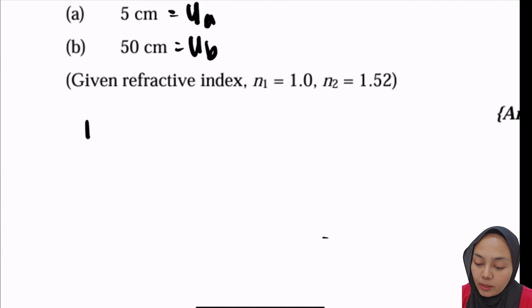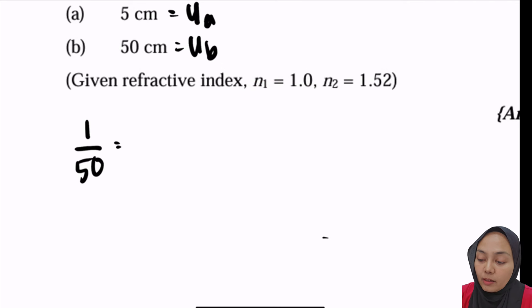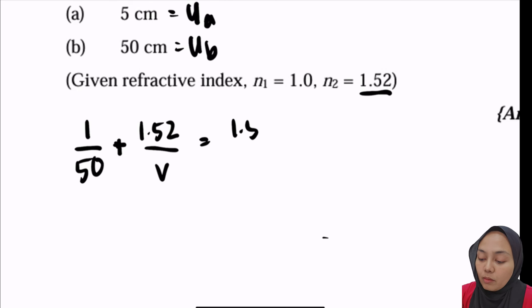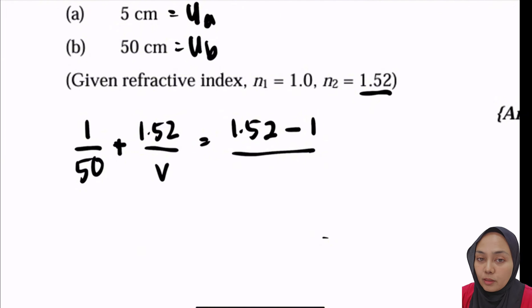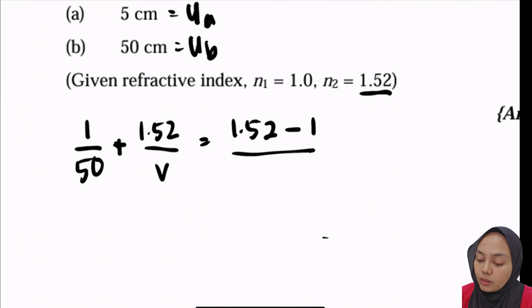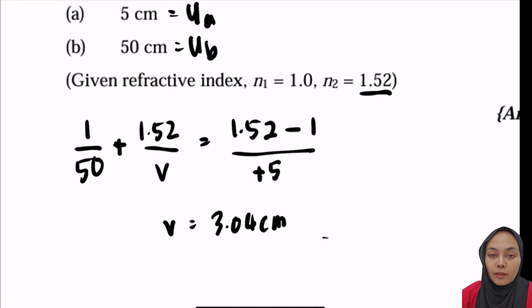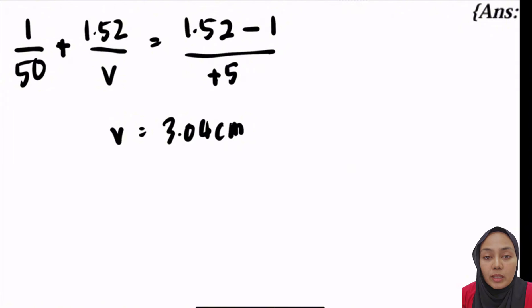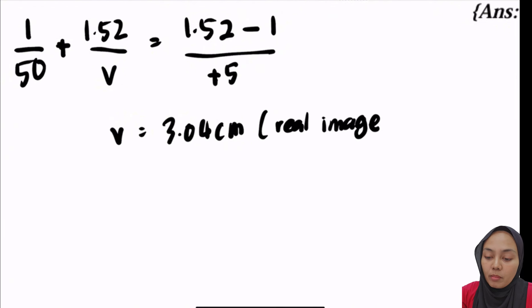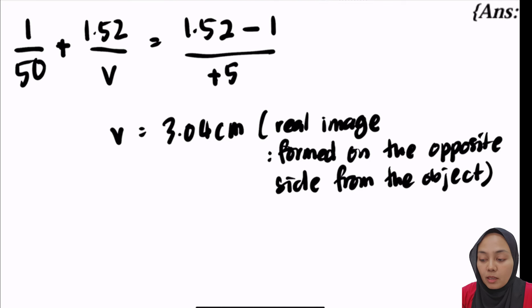For part B, u is 50 cm. The equation becomes: 1 over 50 plus 1.52 over v equals 1.52 minus 1 over positive 5. The surface is still convex, so r is still positive. Solving gives v equals positive 3.04 centimetres. This is a real image because v is positive, meaning the image is formed on the opposite side from the object.